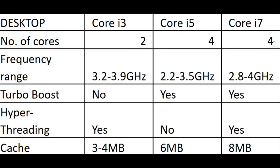The i7 is boosted to eight cores with hyper-threading, but it's not going to be double the performance — just a modest 15% to 20% gain in performance.